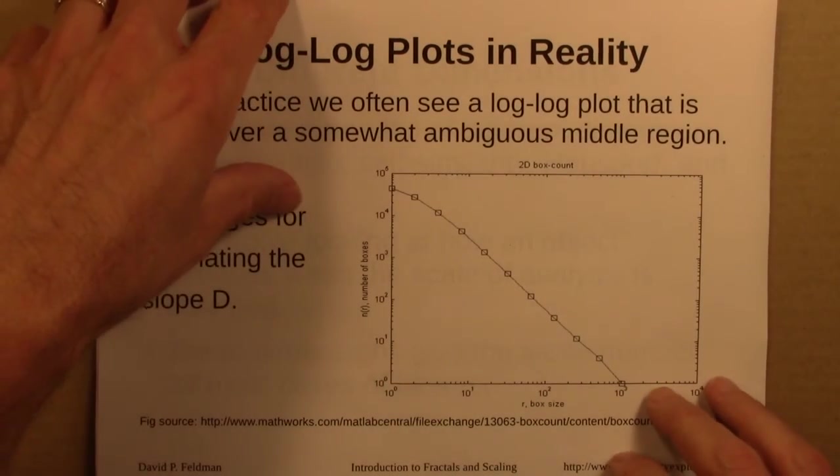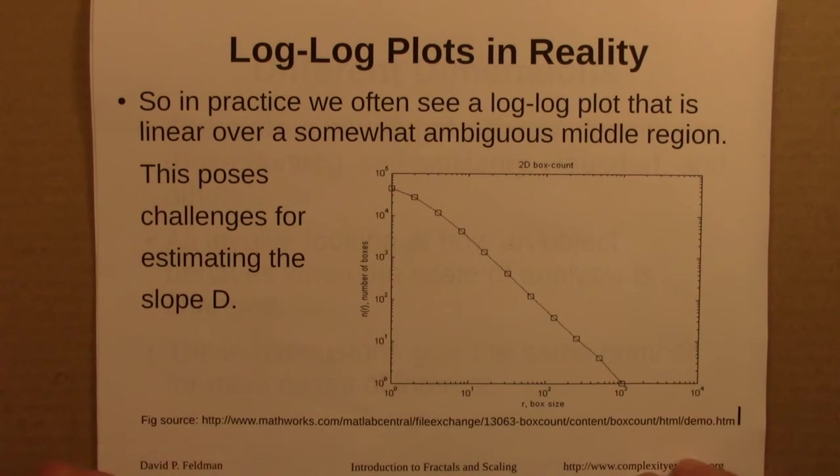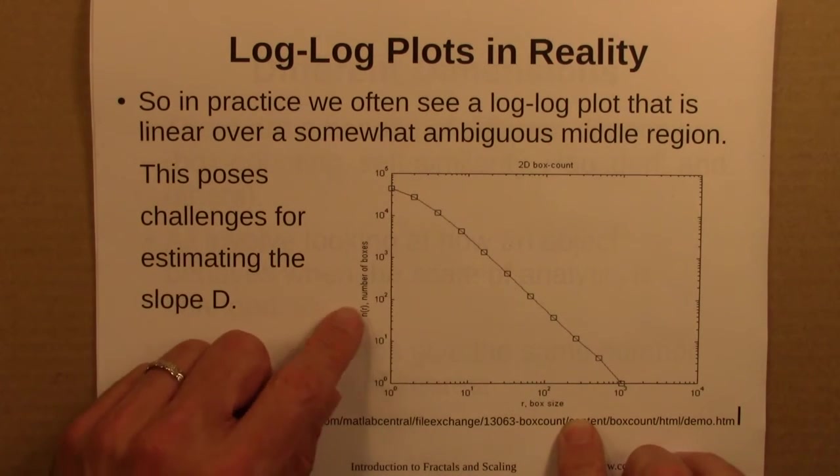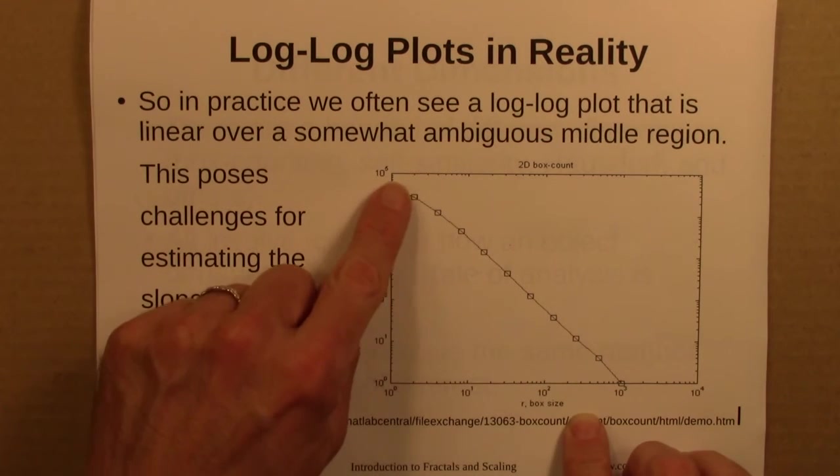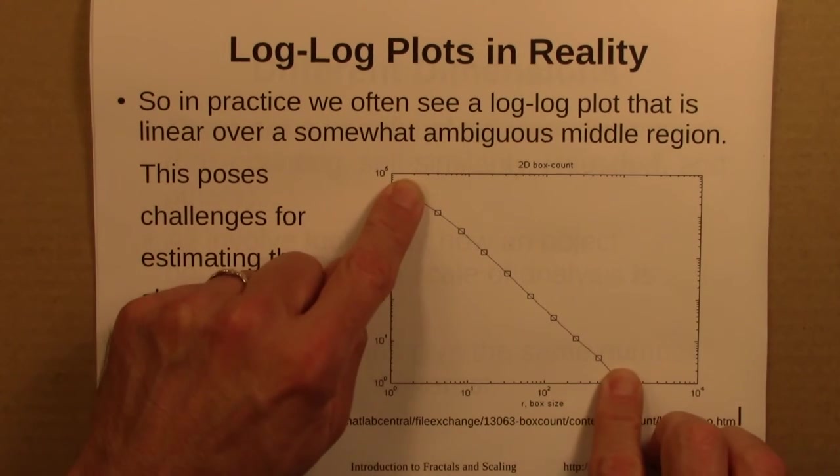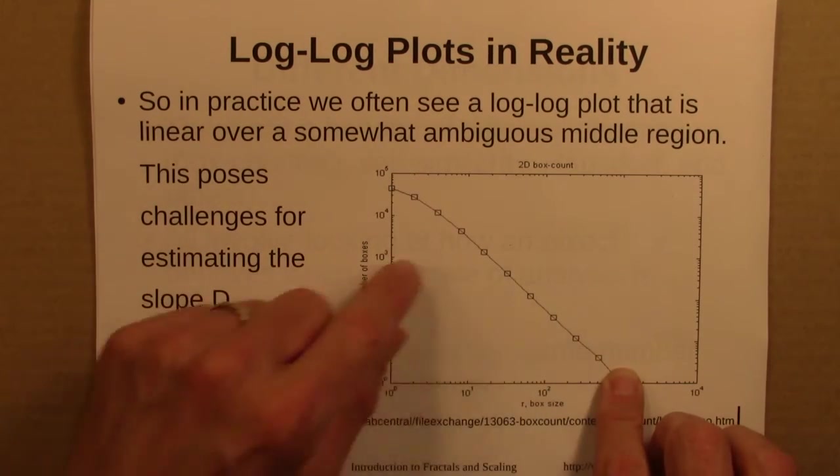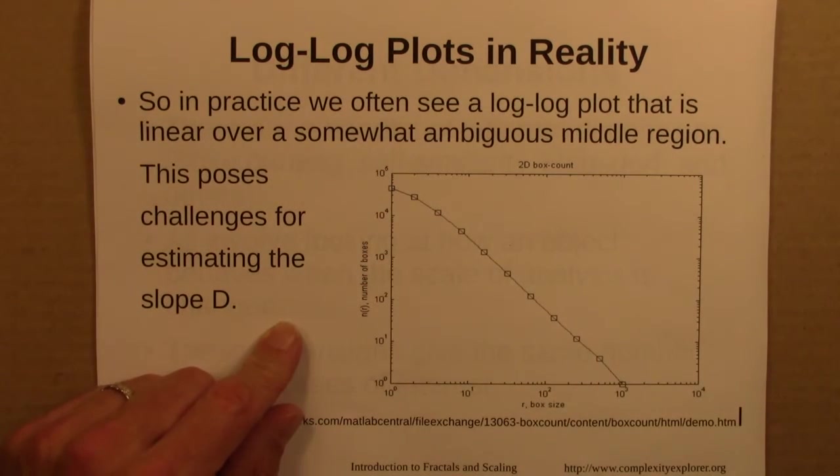So the upshot of all of this is that in reality, in realistic systems, instead of seeing a beautifully linear log-log plot, we often see something that looks like this. Yeah, it definitely looks linear over a region. Maybe we need to get rid of those points, maybe those. It's a little bit ambiguous exactly where the linear region is, and the linear region is the one we would use to fit the slope.